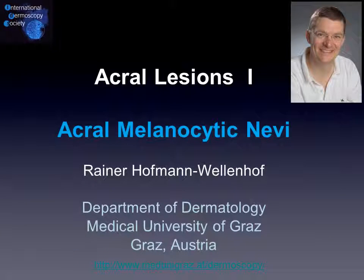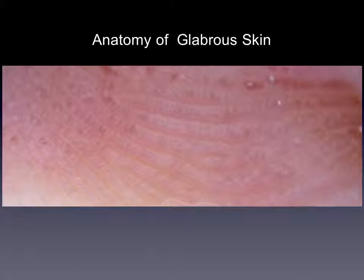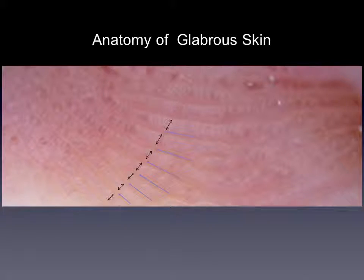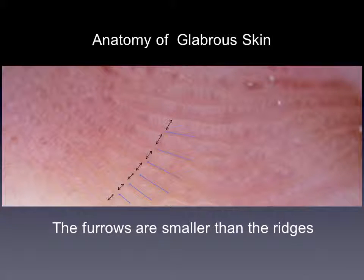Hello, here is Rainer Hoffmann Wellenhof from the Medical University of Graz in Austria. I want to tell you something about acral melanocytic nevi. First, we have to remember a little bit the anatomy of the glabrous skin. We have ridges and we also have furrows. It's important to know that the furrows are smaller than the ridges.